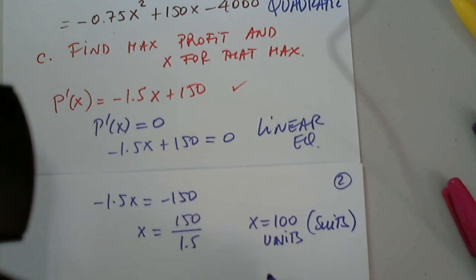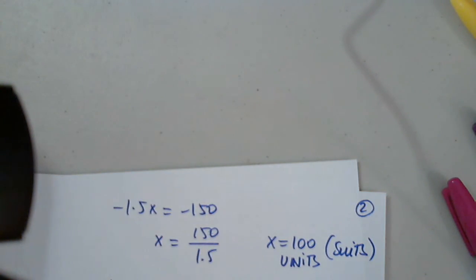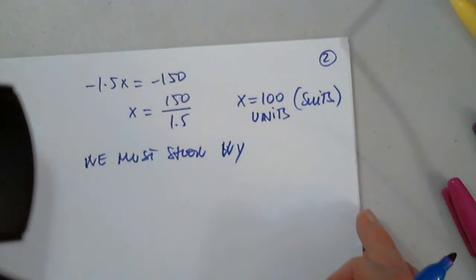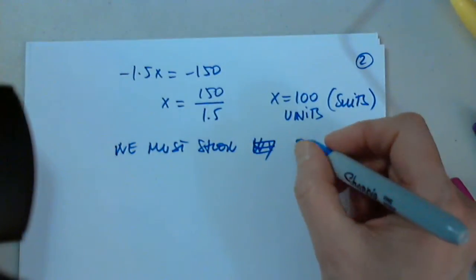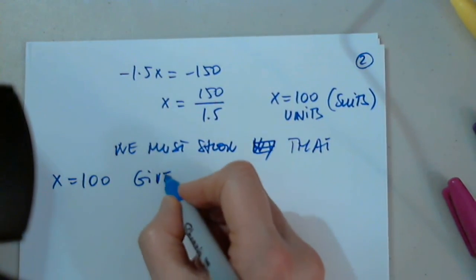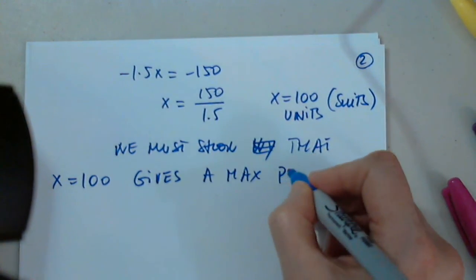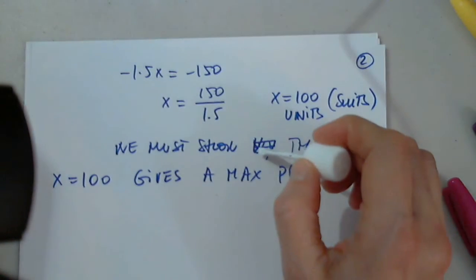This means nothing. So, we have to, we must show why. We must show that X equals 100 gives a max profit. We have to show why.